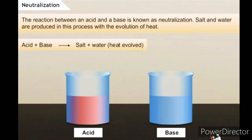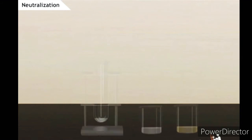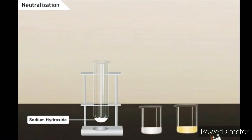Salt and water are produced in this process with the evolution of heat. Take some amount of sodium hydroxide, which is a base, in a test tube.